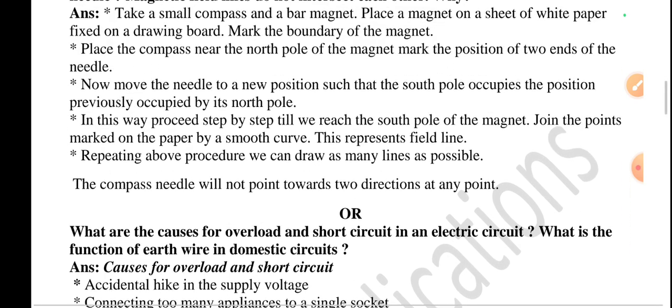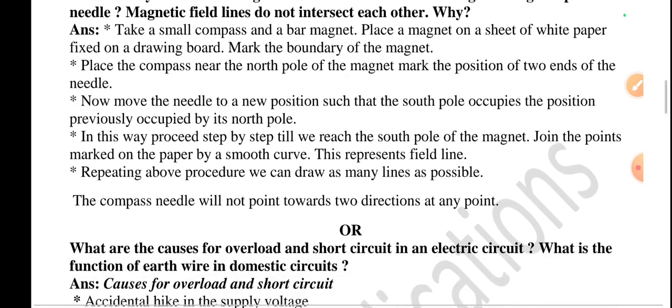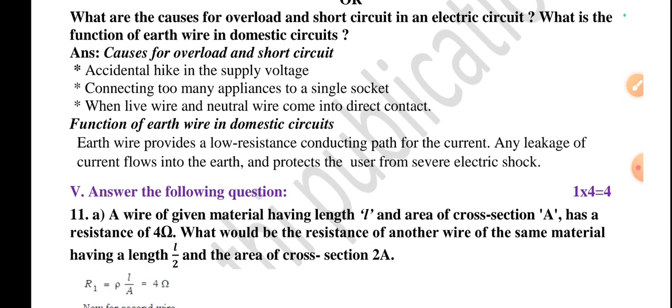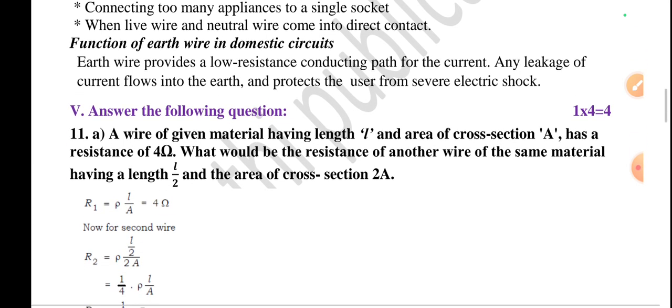If you know this answer for the tenth one, you can write that, or they've given another alternative question: What are the causes for overload and short circuit in an electric circuit? What is the function of earth wire in a domestic circuit? Causes for overload and short circuit: accidental hike in the supply voltage, connecting too many appliances to a single socket, when a live wire and neutral wire come into direct contact. Because of these reasons, short circuit will occur or overload will occur in an electric circuit.